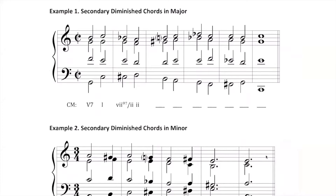We are going to be on the lookout for secondary dominants and secondary diminished chords. If you look at the first four chords I've written in this progression, you will notice the chromatic chord is a fully diminished seventh — a vii°7 of ii — tonicizing two.